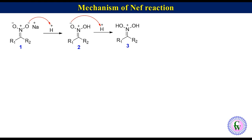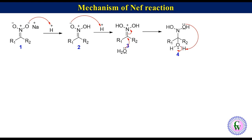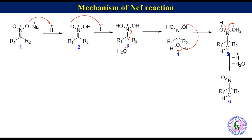In the reaction medium, water is the only nucleophile. Addition of a water molecule to the iminium ion produces species 4, which after proton exchange gives species 5. Species 5 then undergoes loss of a proton and water to produce nitrosoalkanol 6.